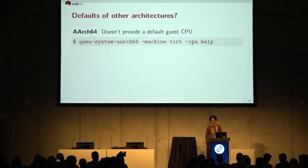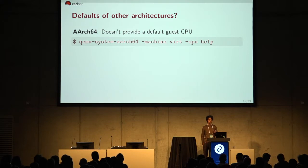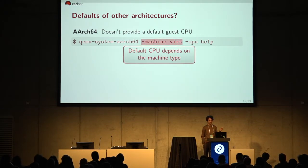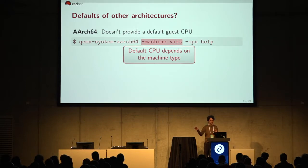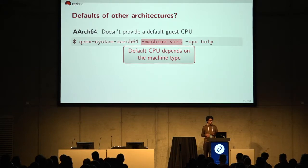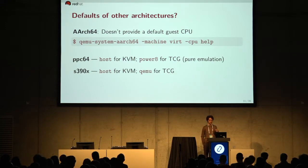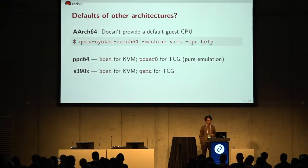What about defaults for other architectures? On the AArch64 ARM ecosystem, QEMU sensibly provides a default CPU, but the default depends on what kind of machine type you configure. Think of machine type as a virtual chipset that provides certain devices — we'll get to that briefly later. Other architectures like s390x and PPC have their own defaults based on whether you're using pure software emulation or hardware-accelerated drivers like KVM.